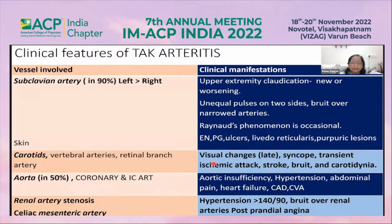Due to these involvements, patients may have visual changes, syncope, transient ischemic attacks, stroke, bruit, and carotidynia. Because of aortic root involvement, there may be aortic insufficiency, hypertension, abdominal pain, heart failure, CAD, and CVA.